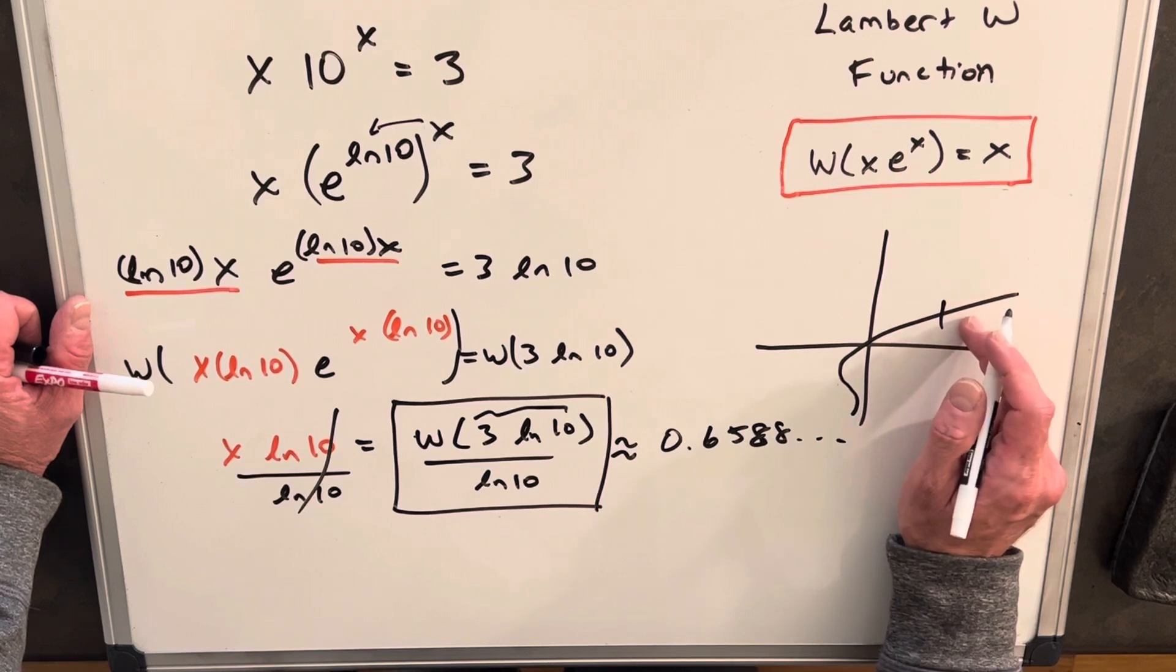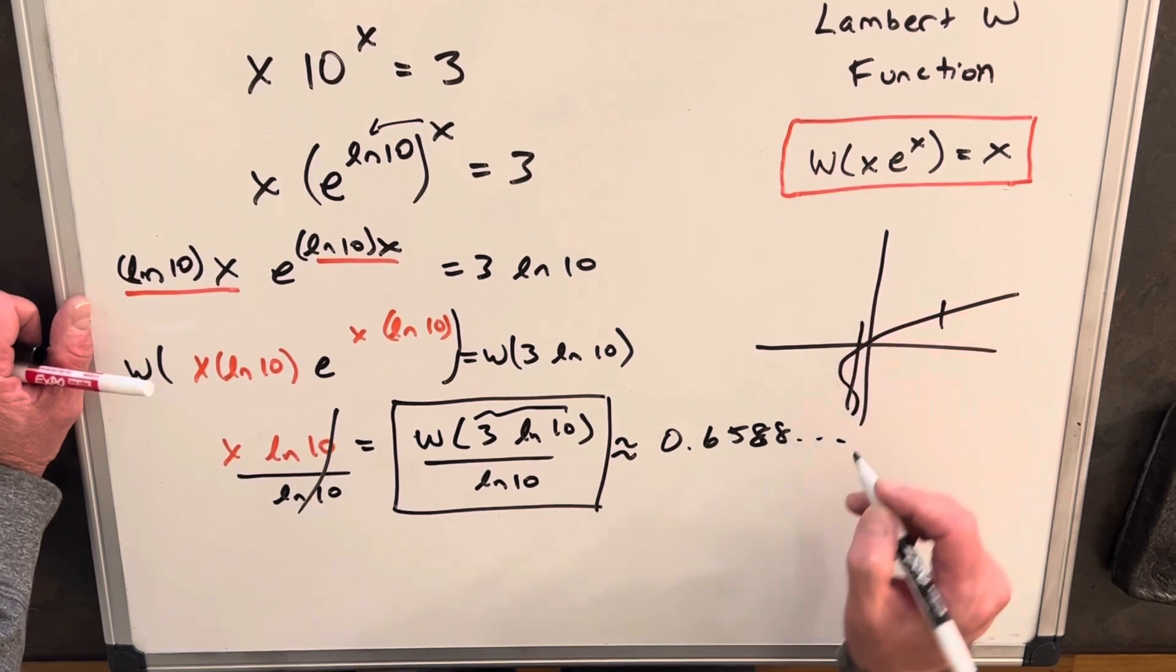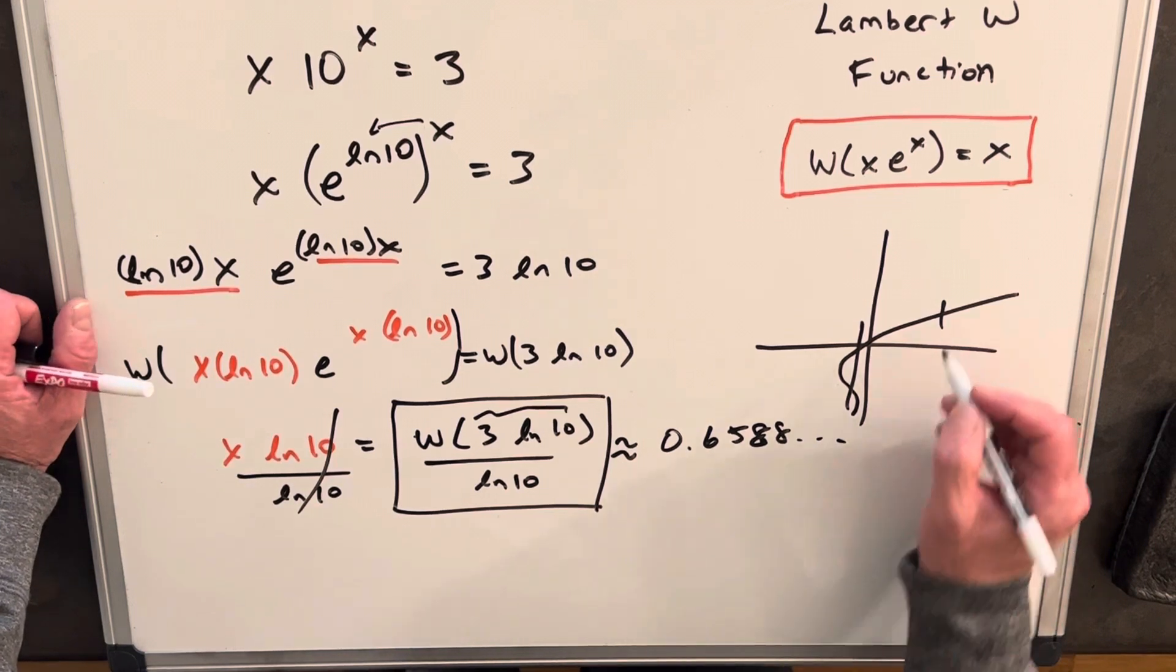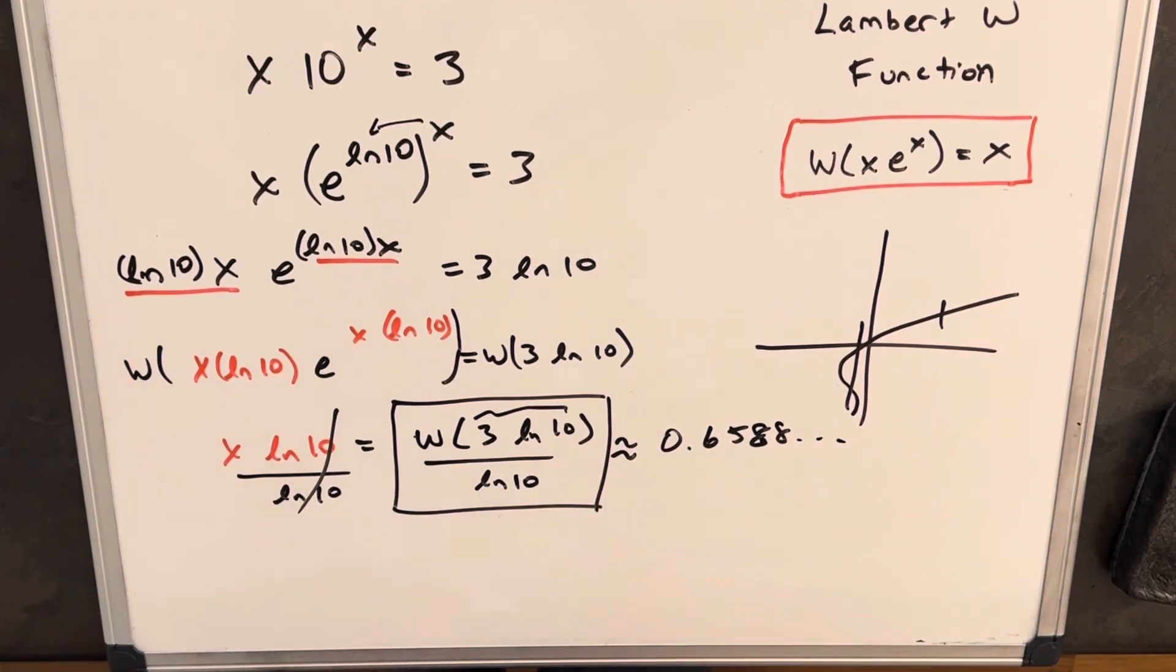You'd have to be in this area to have multiple real solutions. So we're just going to have one real solution for this, 0.6588.